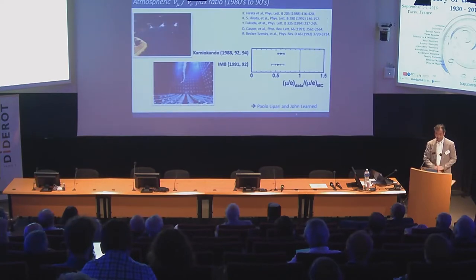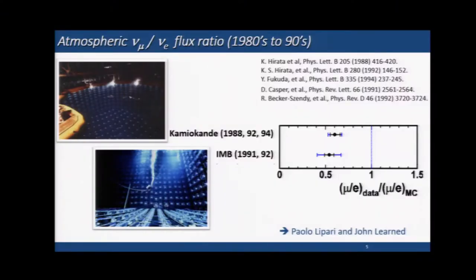Yesterday we had a lot of discussions on the mu-over-e ratio measurement. This is the summary of the measurement by Kamiokande and IMB. Both experiments observed the deficit of muon neutrinos relative to electron neutrinos.